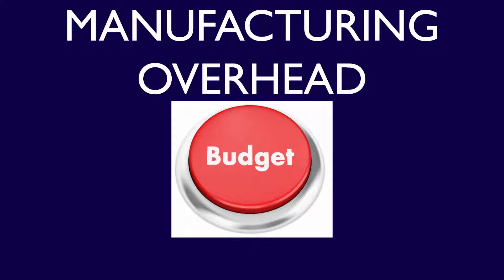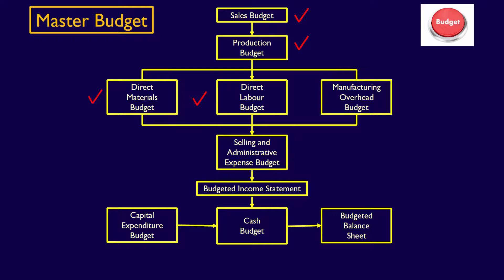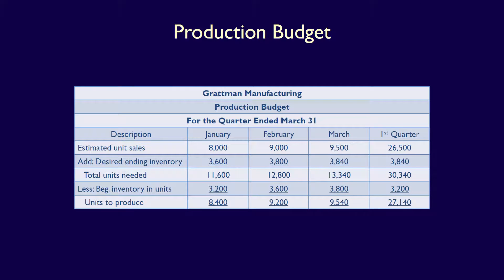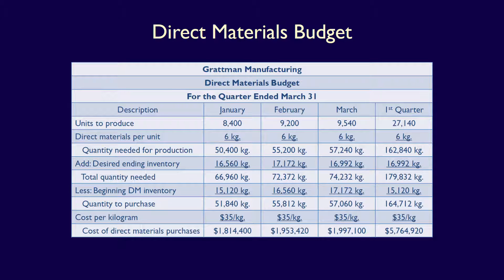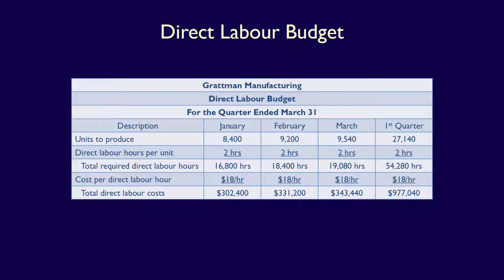We're continuing the master budgeting process and preparing a manufacturing overhead budget. We have already completed four of Gratman Manufacturing's operating budgets in our previous videos – the sales budget, production budget, direct materials budget, and in the last video, the direct labour budget.